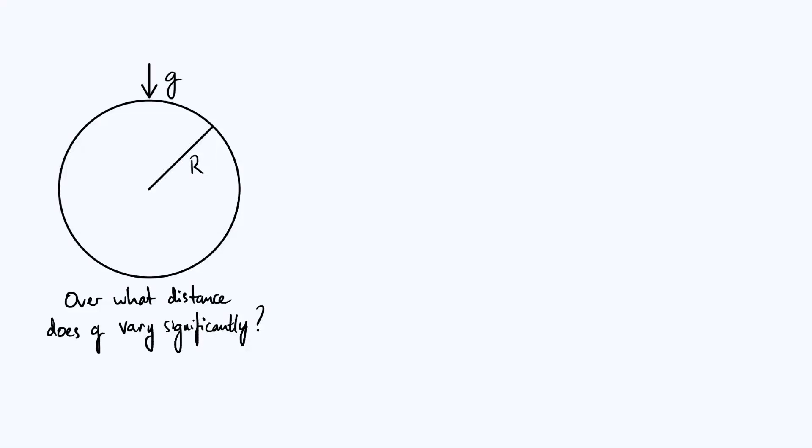Hello everyone, this is just going to be a quick video in which we consider the question of the length scale over which it's reasonable to consider that the value of the gravitational field strength g remains approximately constant.